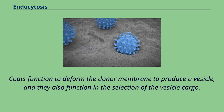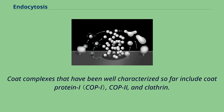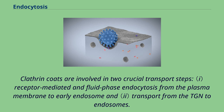Coats function to deform the donor membrane to produce a vesicle, and they also function in the selection of the vesicle cargo. Coat complexes that have been well characterized so far include coat protein I (COP1), COP2, and clathrin. Clathrin coats are involved in two crucial transport steps: receptor-mediated and fluid phase endocytosis from the plasma membrane to early endosome, and transport from the TGN to endosomes.